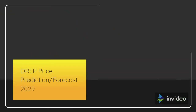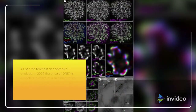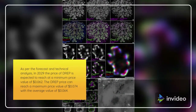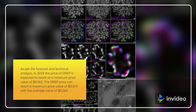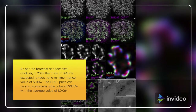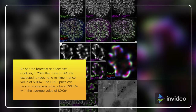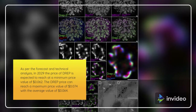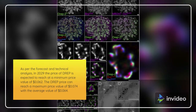DREP Price Prediction 2029. As per the forecast and technical analysis, in 2029 the price of DREP is expected to reach a minimum price value of $0.062. The DREP price can reach a maximum price value of $0.074 with the average value of $0.064.